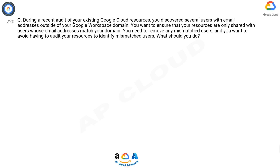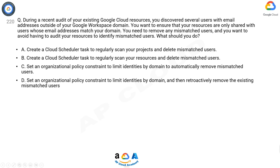Question 220. During a recent audit of your existing Google Cloud resources, you discovered several users with email addresses outside of your Google Workspace domain. You want to ensure that your resources are only shared with users whose email addresses match your domain. You need to remove any mismatched users and avoid having to audit your resources to identify them. What should you do? A: Create a Cloud Scheduler task to regularly scan your projects and delete mismatched users. B: Create a Cloud Scheduler task to regularly scan your resources and delete mismatched users.